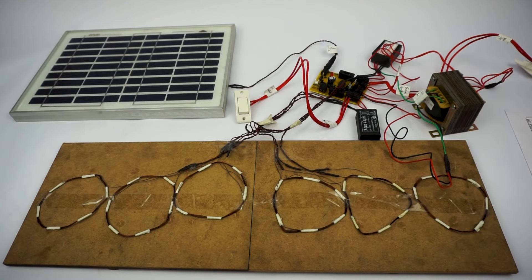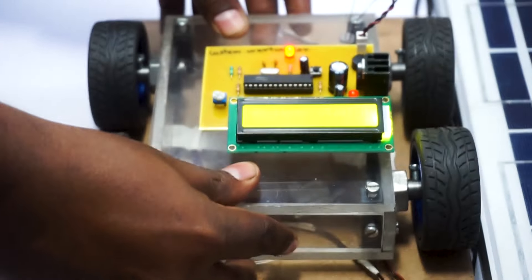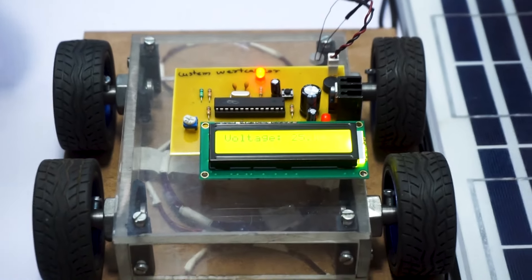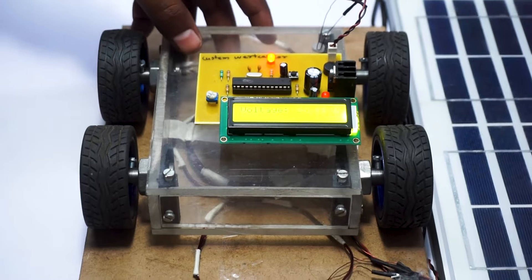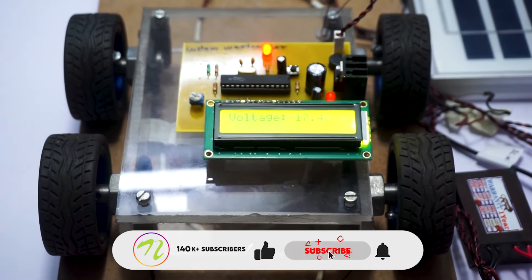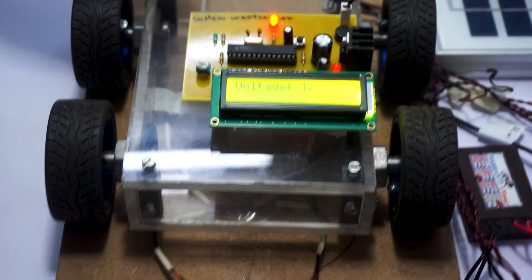These coils are integrated into the road, and as the vehicle moves over them, another coil located underneath the vehicle is used to receive the power wirelessly from these coils. Using this mechanism, the vehicle when it moves over the road does not need to stop for charging and is charged continuously as it goes over the road.